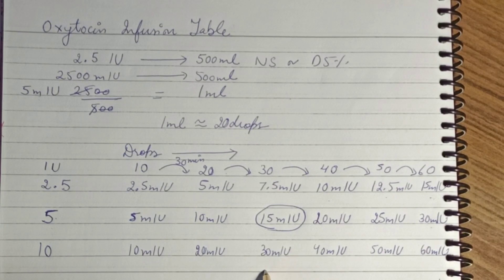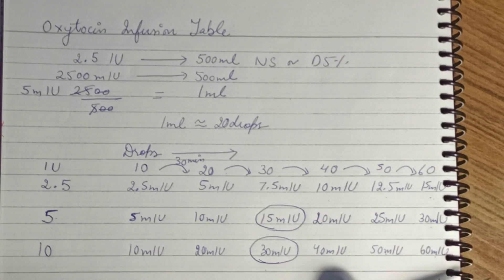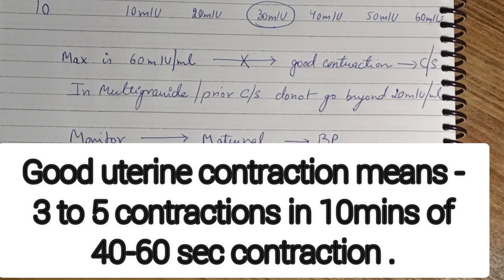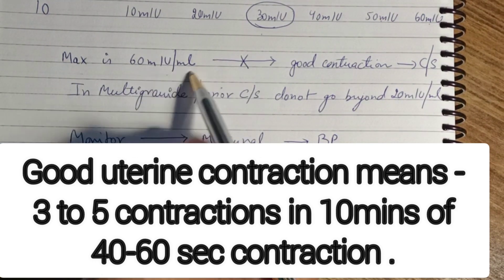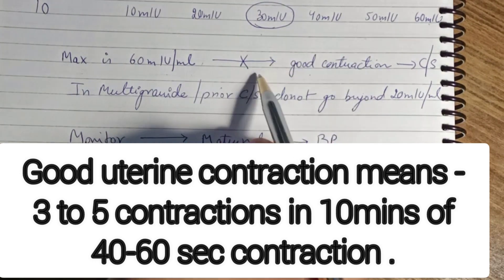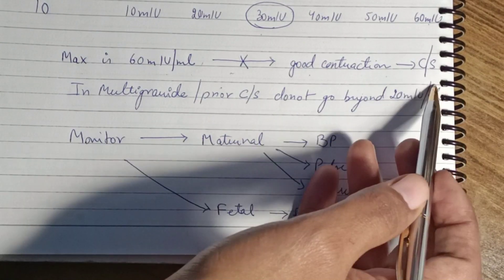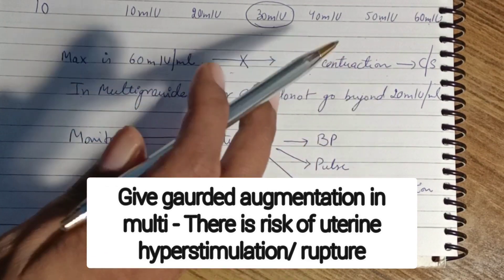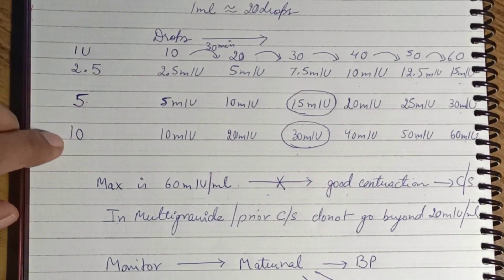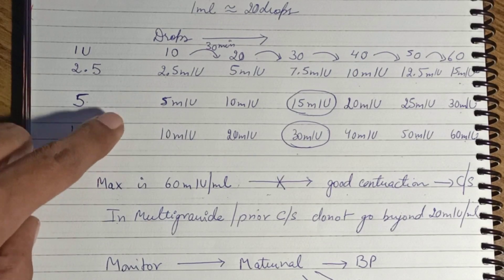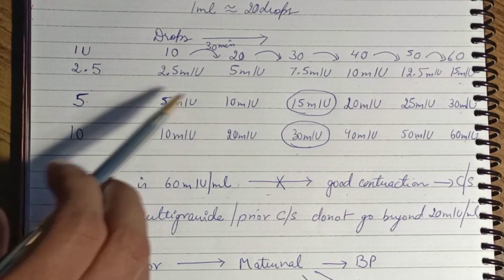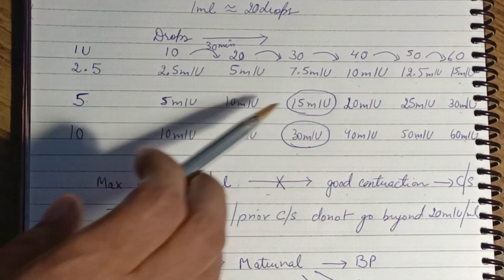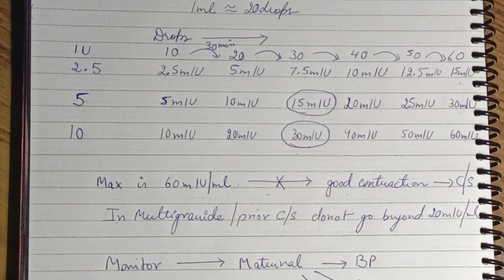The next step is 10 international units in 500 ml NS, again starting at 30 drops per minute, then going to 40, 50, and 60 drops. The maximum dose given is 60 milli-international units per minute. If good uterine contractions are still not achieved at this maximum, you proceed to cesarean section. For multigravida patients or patients with a prior cesarean section, you do not go beyond 20 milli-international units per minute — meaning you do not use the 10 IU bottle, and the maximum is 5 IU in 500 ml at 40 drops per minute.